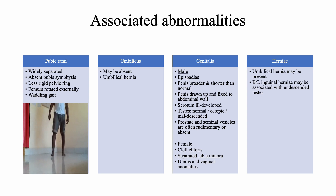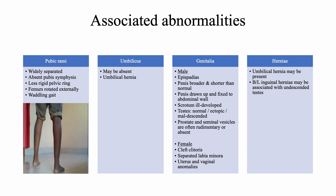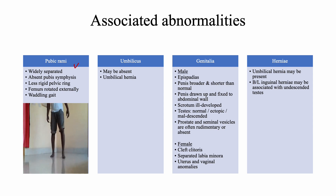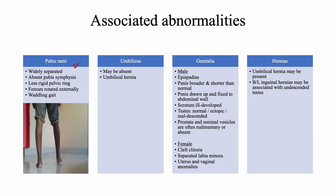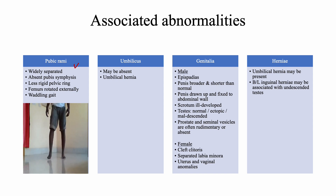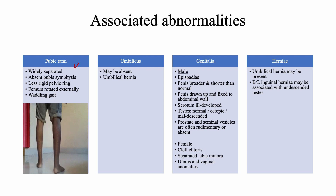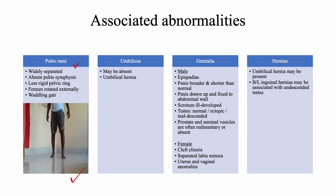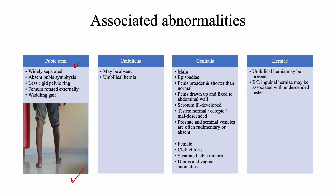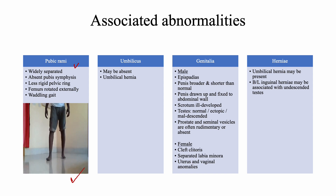Associated abnormalities of ectopia vesica include: the pubic rami are widely separated, there is an absent pubic symphysis because the two pubic bones are not fused, the pelvic ring is less rigid, the femurs are rotated externally, and the patient presents with a waddling gait due to the external rotation of the femurs.